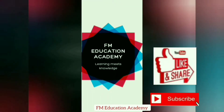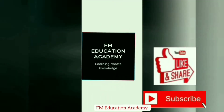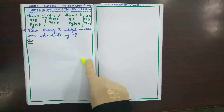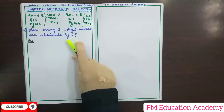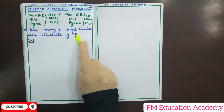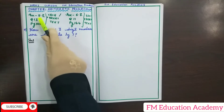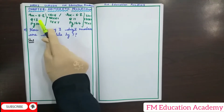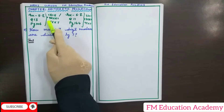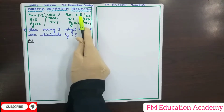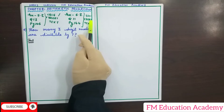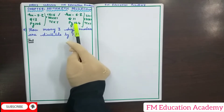Please like, share and subscribe to this channel, FM Education Academy. How many three-digit numbers are divisible by 7? This question is taken from Chapter Arithmetic Progressions of Maths Class 10th, present in CBSE Exercise 5.2, Question 13 on page 106 in the NCERT textbook, and also available in Exercise 6.2 for SSC in SCERT textbook, Question 11, page 144.